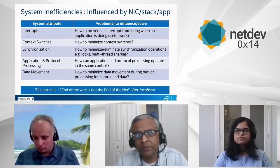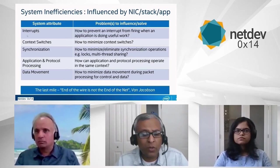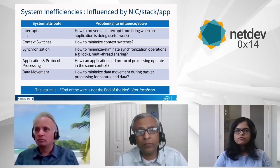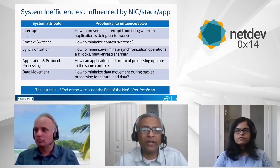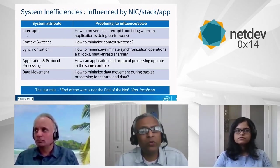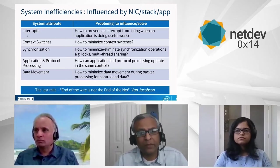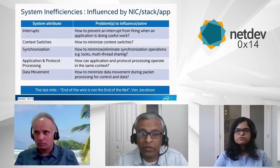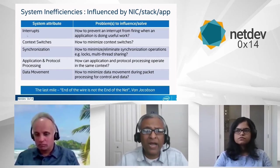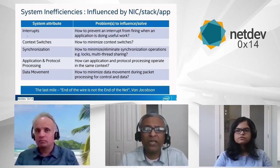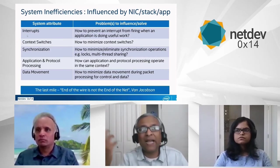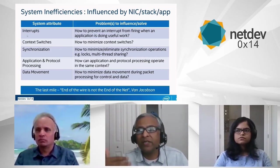The third system inefficiency is about working set locality. How do you contain or address the working set locality issue? How do you make sure your application and the protocol processing operate in the same context? That will also result in reducing data movement — data movement during packet processing for control and data. We want to minimize that if you want to contain the working set locality. The idea is that last mile — the end of the wire is not the end of the net. Essentially, the end of the wire is the end of the app. To make that happen, we really need to look at the system inefficiencies and how to address those.